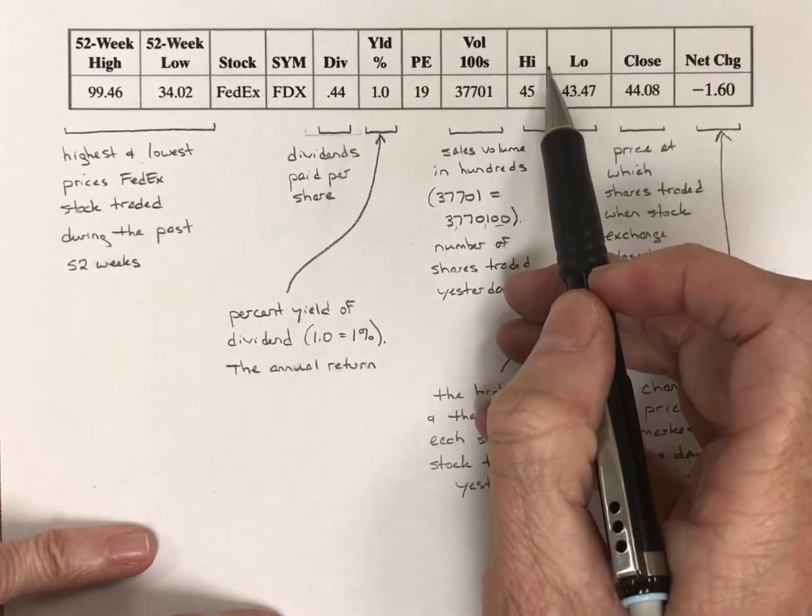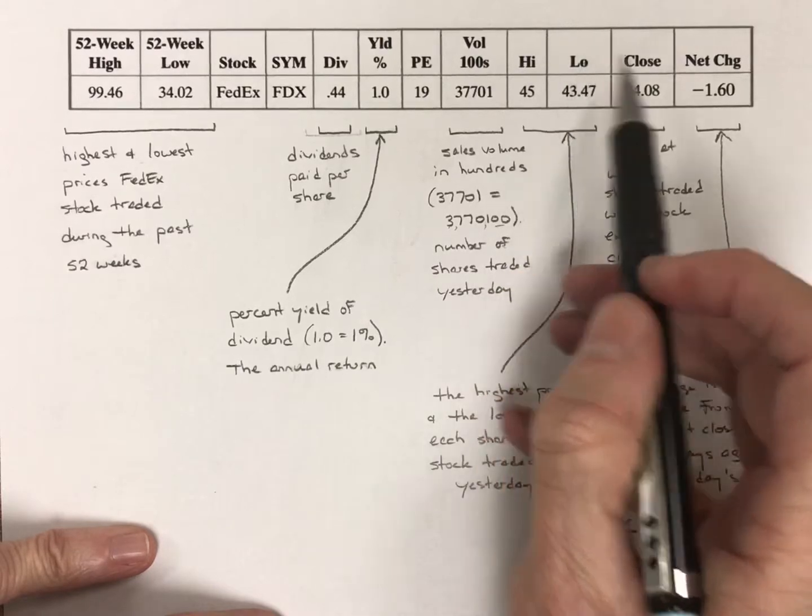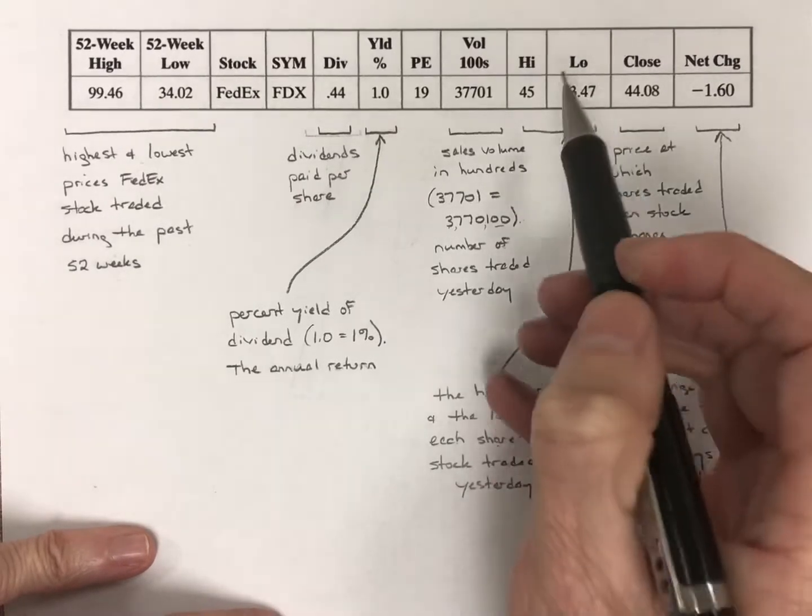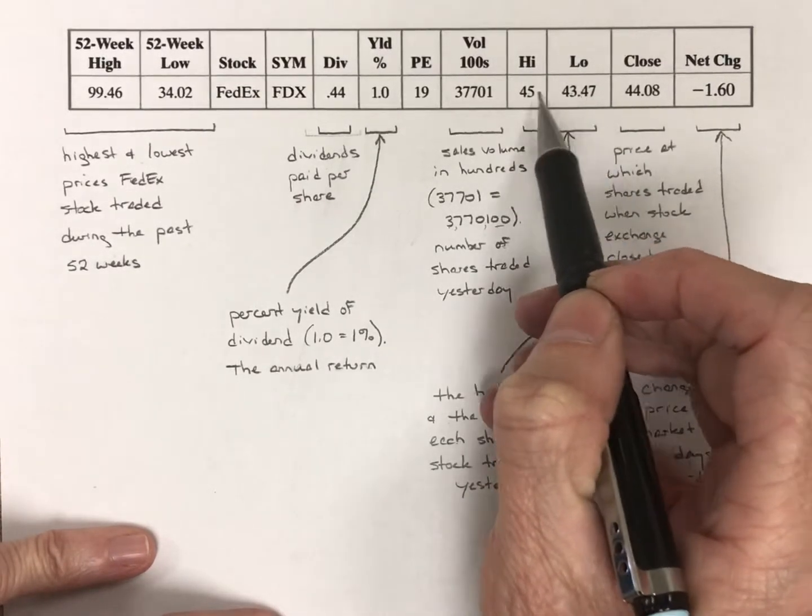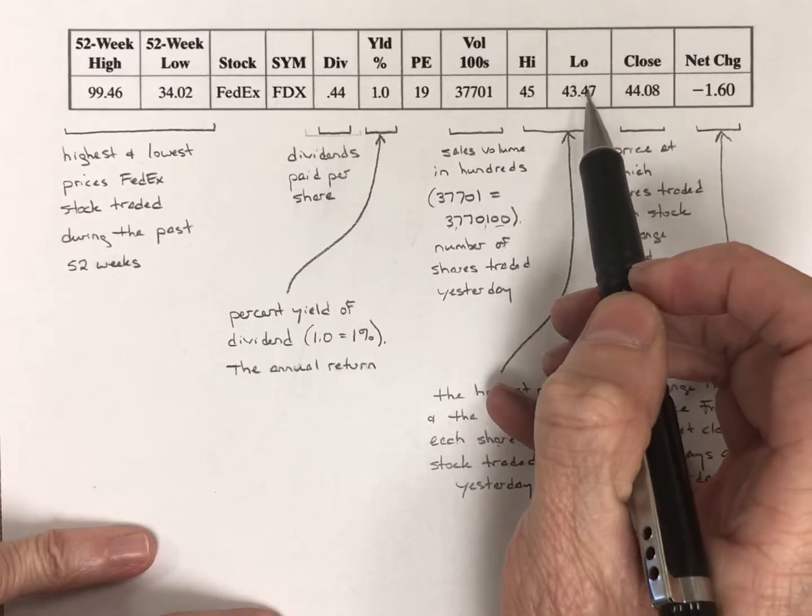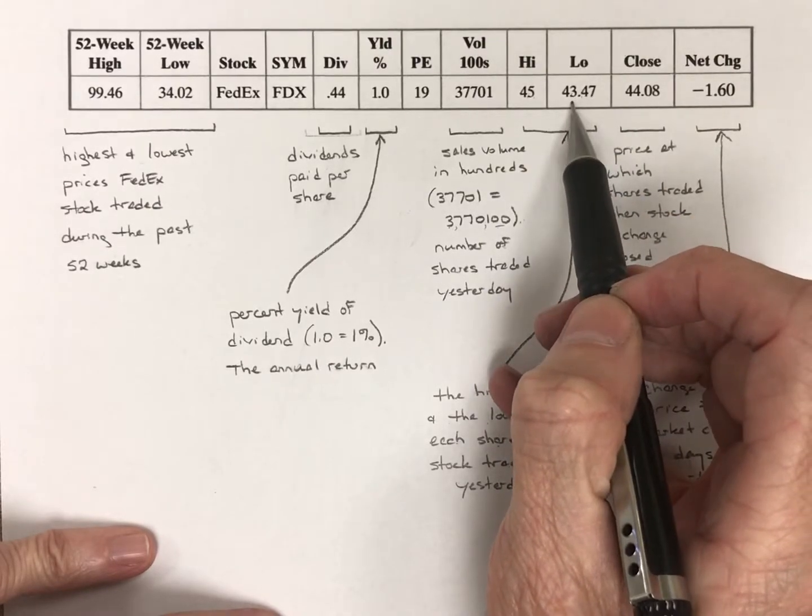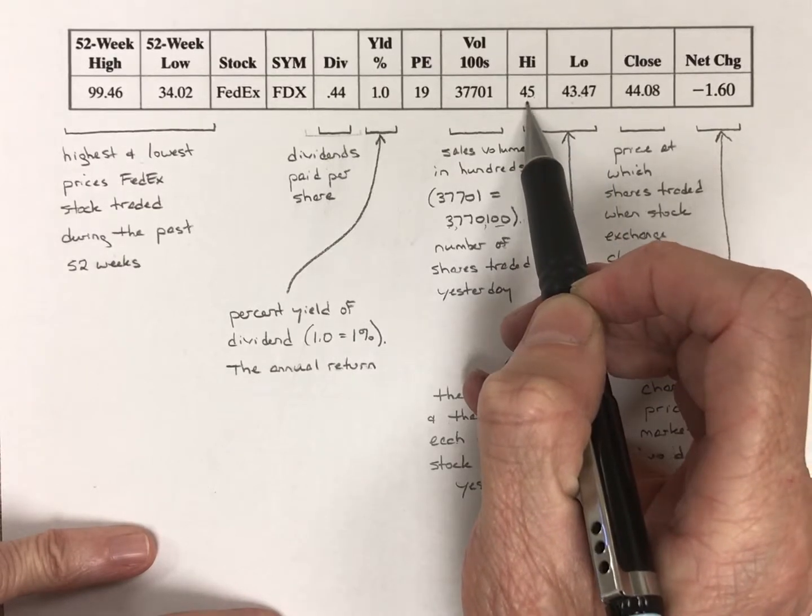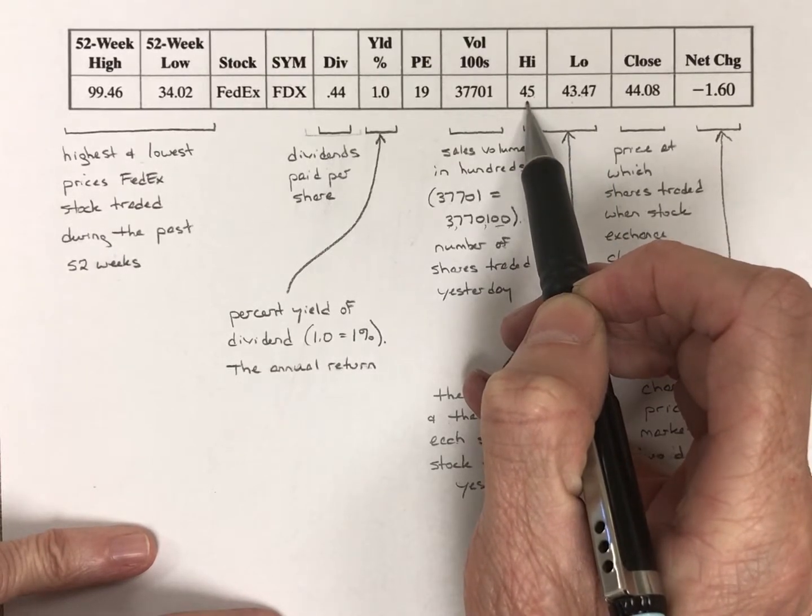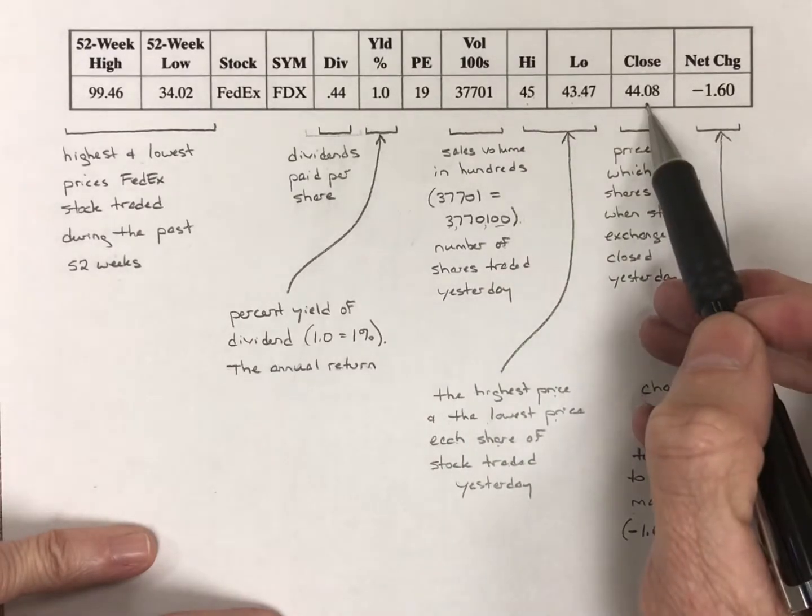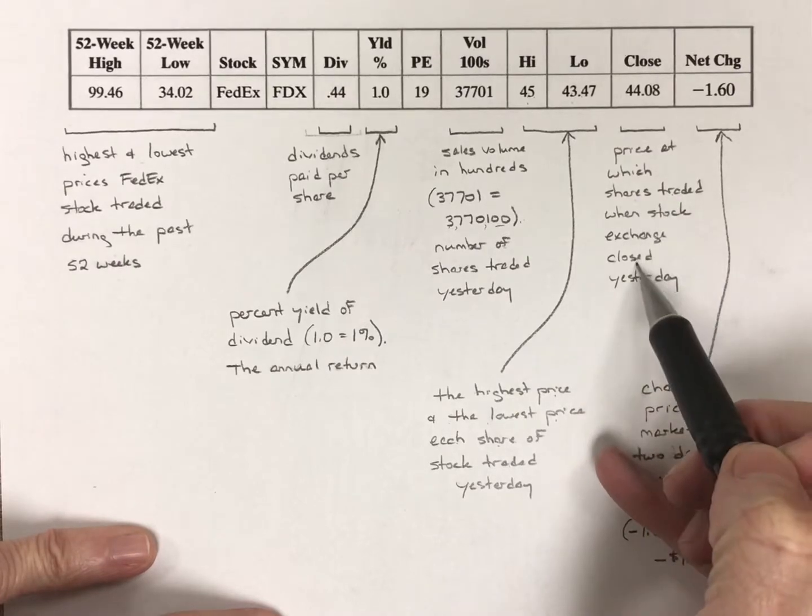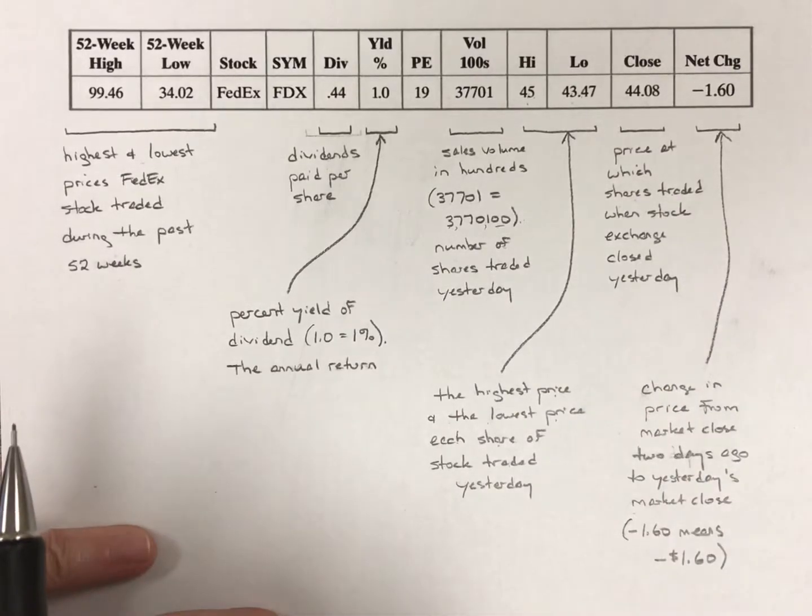Okay, high-low. This has to do with the highest price and the lowest price. Each share of stock was traded yesterday. So this stock fluctuated in yesterday's trading only between $43.47 a share as its lowest and $45 a share at its highest. Close. Close is the price at which the shares traded when the stock exchange closed yesterday, the closing price.